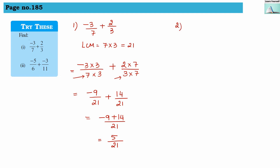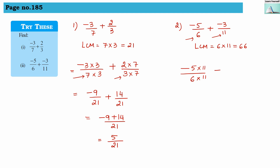The second numerical is minus 5 divided by 6 plus minus 3 divided by 11. Our LCM is 6 into 11, which equals 66. We convert the denominators to 66: minus 5 divided by 6, multiplying above and below by 11, plus minus 3 divided by 11, multiplying above and below by 6. This gives minus 55 plus minus 18, all divided by 66.